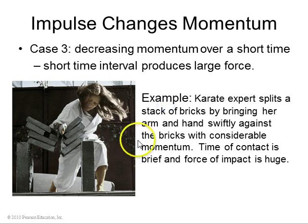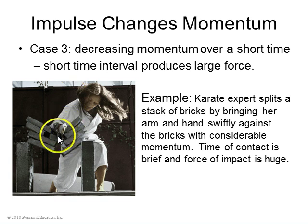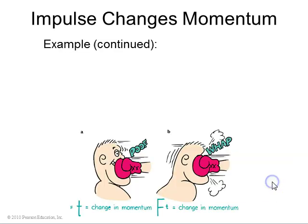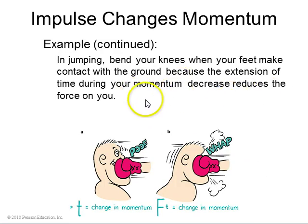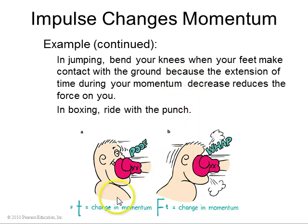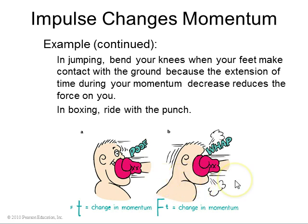A short time interval produces a large force. A karate expert hits her hand and arm against bricks, and her hand stops in a very short amount of time because the bricks are so rigid and brittle, providing a very large force — enough to actually break the bricks. Conversely, if you increase the time, you decrease the force. Bending your knees when you land from a large jump decreases the force on your knees. In boxing, you can ride with a punch: if someone punches you and you let your head go backwards, that increases the time and decreases the force. But if you stand very rigidly, you decrease the time, which increases the force in your face, and it hurts more.